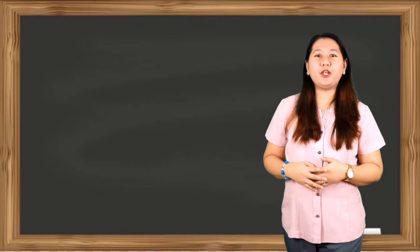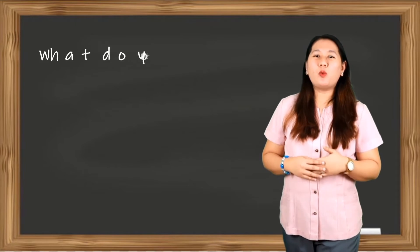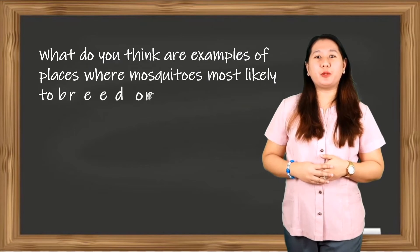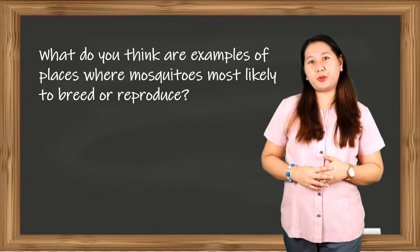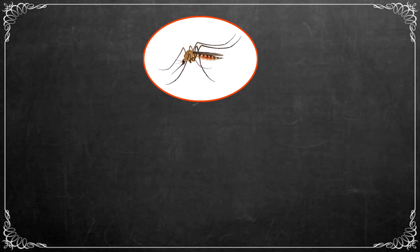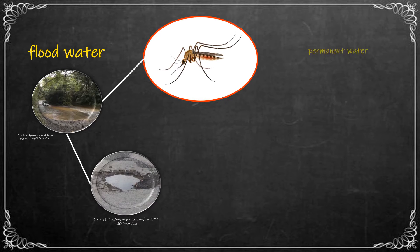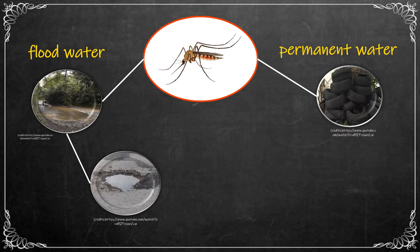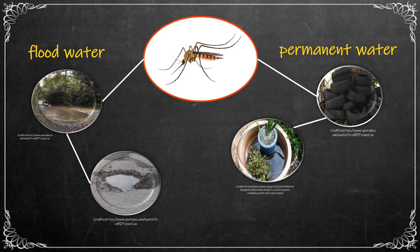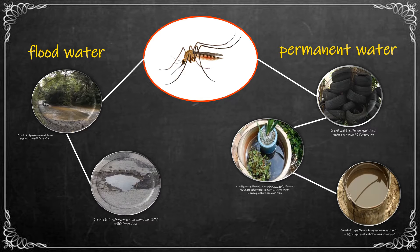Have you ever wondered where mosquitoes breed? Some mosquitoes are considered floodwater species that breed in temporary water habitats, while others breed in water sources that remain for long periods of time. This includes natural habitats such as ponds and swamps, as well as artificial water containers like abandoned tires, flower pots, buckets, or discarded toys.